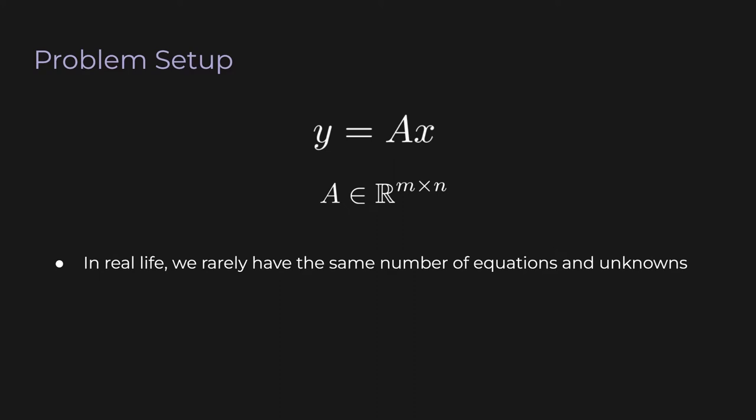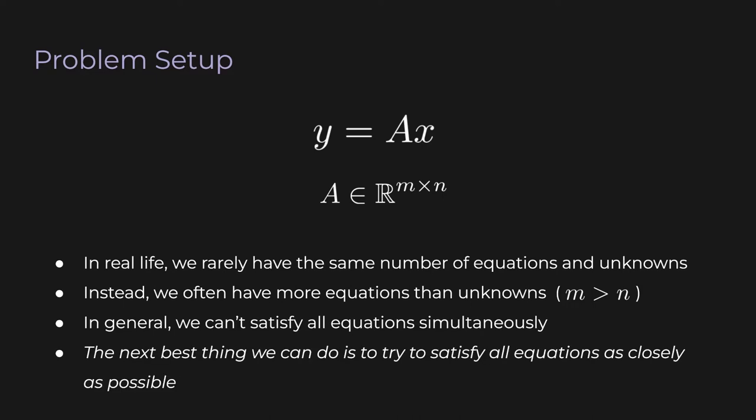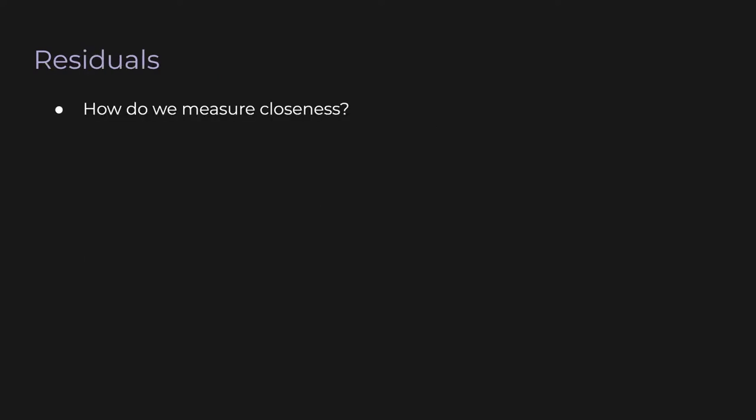In real life we rarely have the same number of equations and unknowns. Actually instead we often have more equations than unknowns, so m is greater than n. And you know from before that this type of matrix is called a skinny matrix. So in general we can't satisfy all equations simultaneously. But the next best thing that we can do is to try to satisfy all equations as closely as possible. So how do we measure closeness?